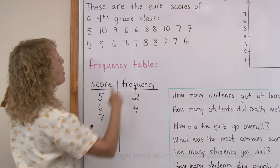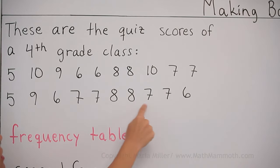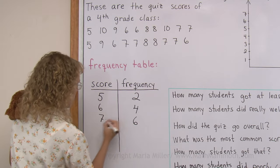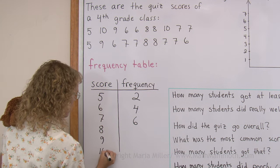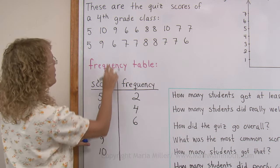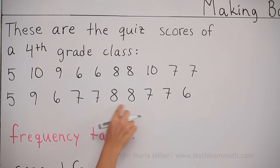And then seven points. We have one, two, three, four, five, six students. And then eight, nine, and ten. Eight. One, two, three, four.